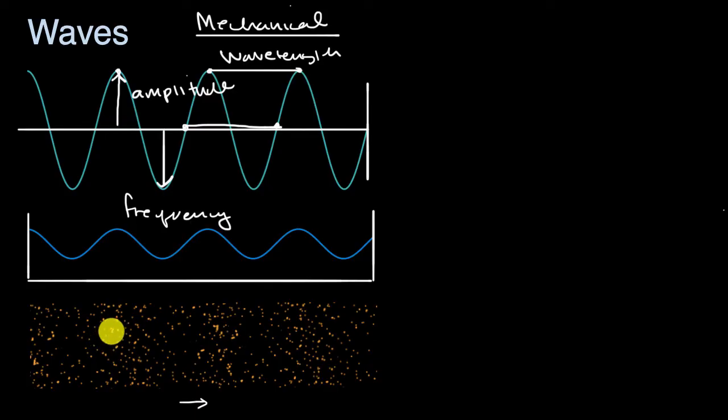Now, there are things that can be described as waves that don't need a medium. In particular, and this is kind of mind-boggling, is that light can be considered a wave. If we think about the different frequencies of light, our brain perceives that as different colors, and if we think about the amplitude of light, our brain perceives that as the intensity of light, how bright it is.